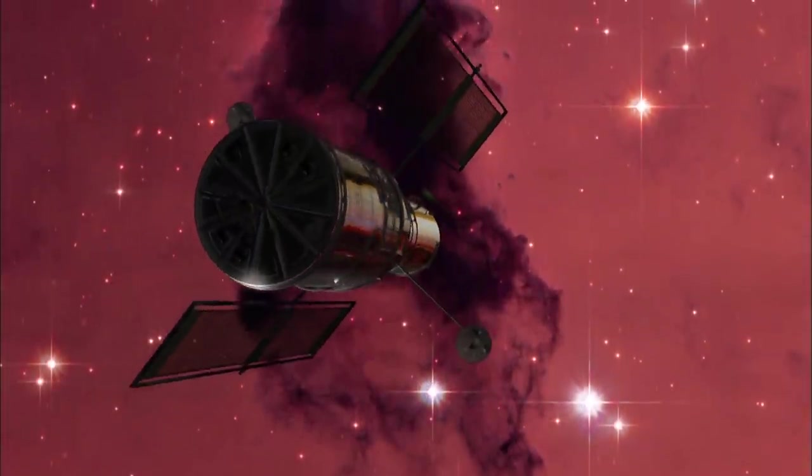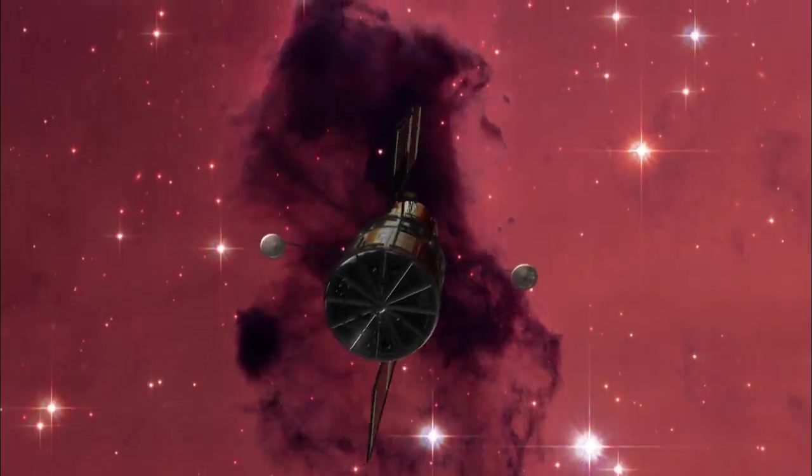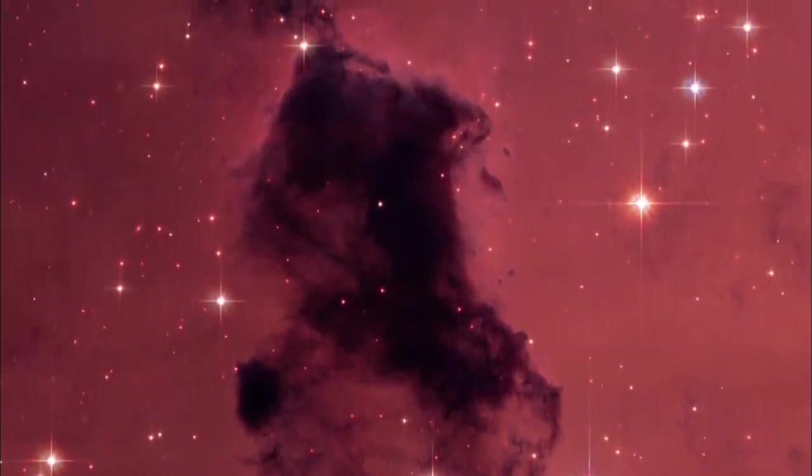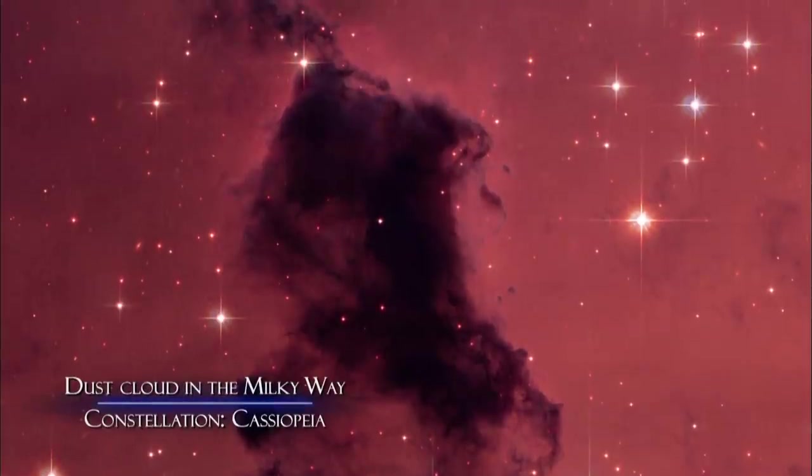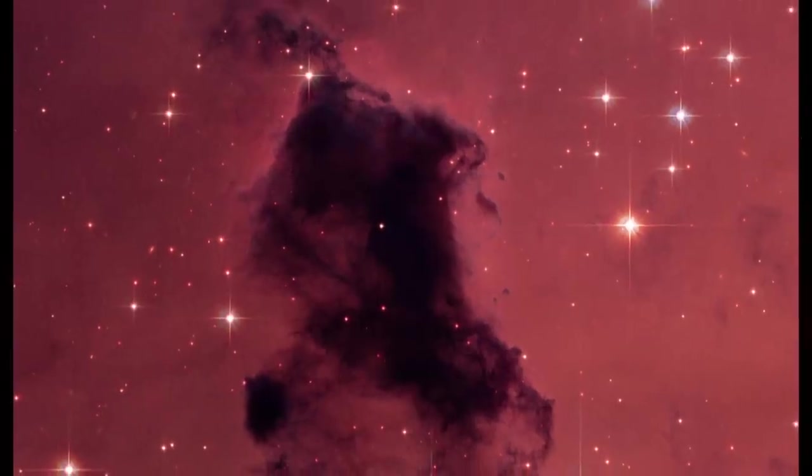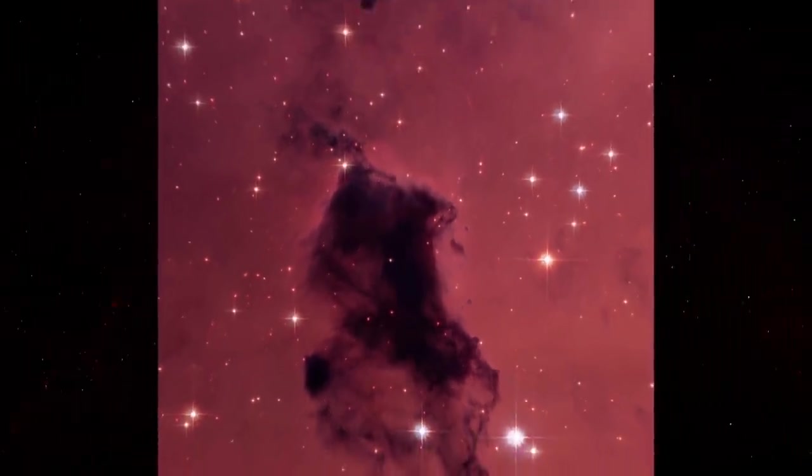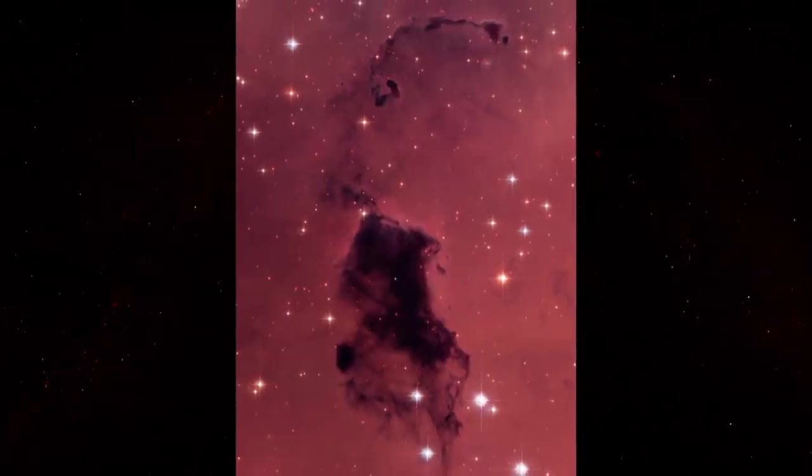Gas may add color to Hubble's canvas, but it's dust that creates some of the most striking views in space. The dust comes in the form of microscopic grains, no bigger than particles of smoke. But when trillions of them get together, they block and absorb light.